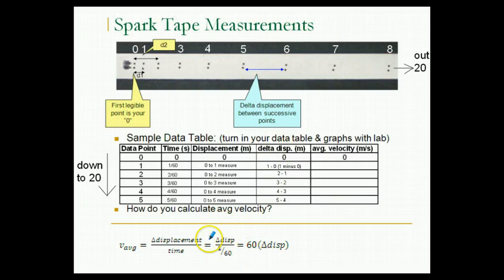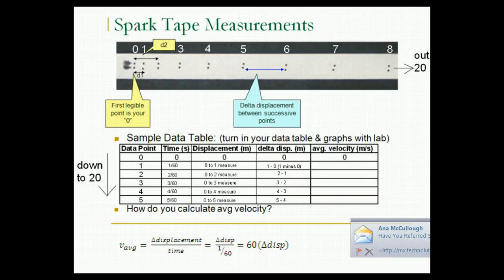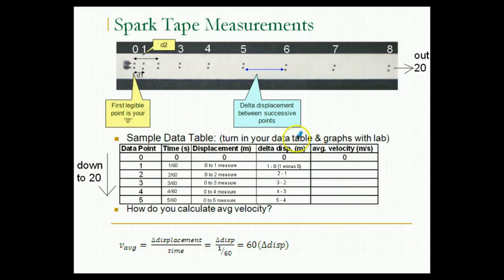For example, the space between five and six, I'll use that delta displacement measurement. And the time it took to travel that distance is one-sixtieth of a second. So down here I see that calculation, the delta displacement divided by one-sixtieth. When you divide by one-sixtieth, that's the same as multiplying by sixty. So to calculate the average velocity for each interval, all you do is take the delta displacement measurement that you got and multiply it by sixty. Now, you have to make sure your delta displacement numbers are recorded in meters. That way, when you multiply it by sixty, you'll get an average velocity in units of meters per second.